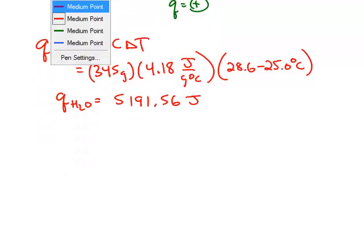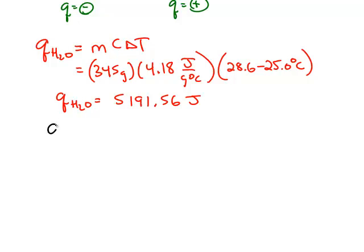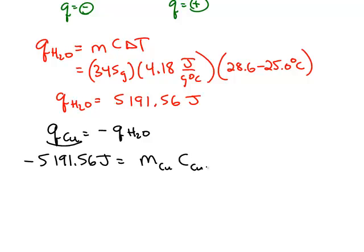We can use that because we know Q for the copper is negative of Q for the water. So we know Q for the copper must be negative 5191.56 joules. And then we can write the mass of the copper, the specific heat of the copper, and the change in temperature of the copper. So we're using the same formula that we used for the water, but this time we're applying it to the copper.